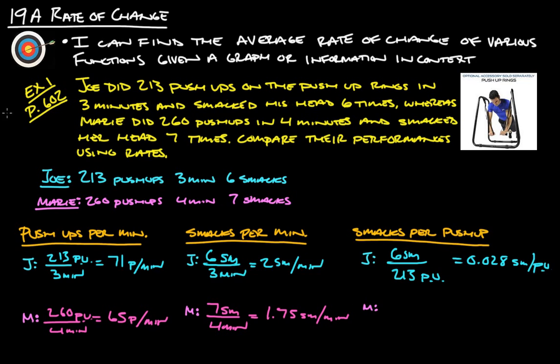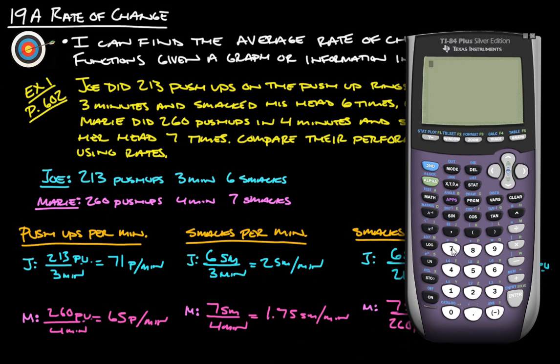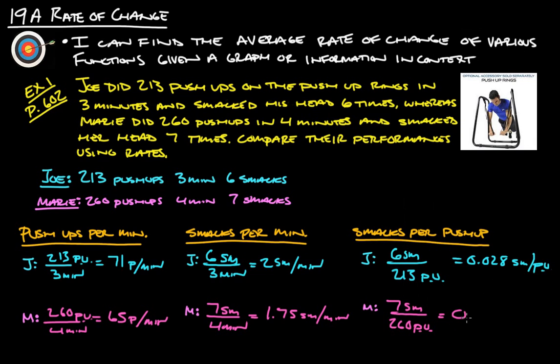And then let's see if we're going to figure out what Marie's is. She was seven smacks for 260 push-ups. That's going to give us seven divided by 260 is 0.027 smacks per push-up.